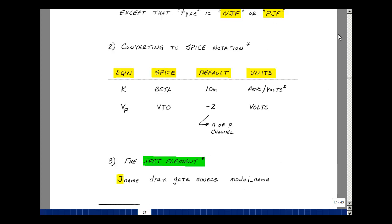The symbols used in SPICE to model the JFET are different terms than we've been using. In SPICE, beta is the same as our K in our equations, and VTO is our pinch-off voltage. The default value of K is 10 milliamps per volt squared, and the default value for the pinch-off voltage is minus 2. Of course, the units on that are volts, and the sign of this is negative for an N- or P-channel device.